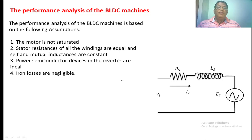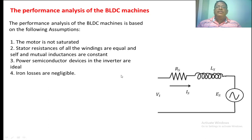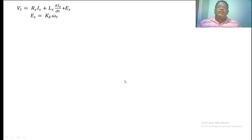We have taken some assumptions before analyzing the BLDC motor: the motor is not saturated, stator resistance in all windings are equal, power semiconductor devices in the inverter are ideal with zero voltage drop, and iron losses are neglected. Applying KVL to the above circuit, the terminal voltage equals the voltage drop across the resistance plus the voltage drop across the inductance plus ES, where ES is the back-EMF.